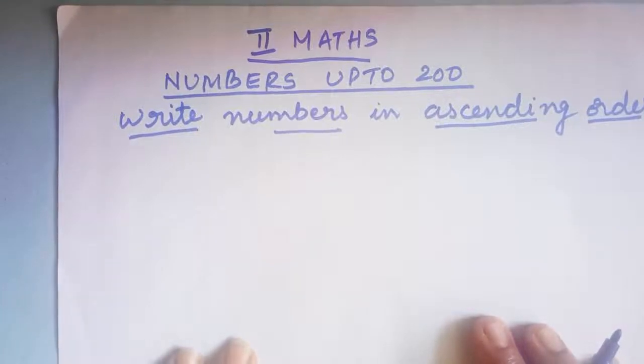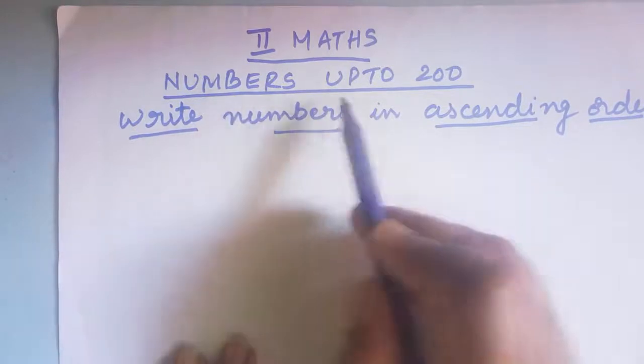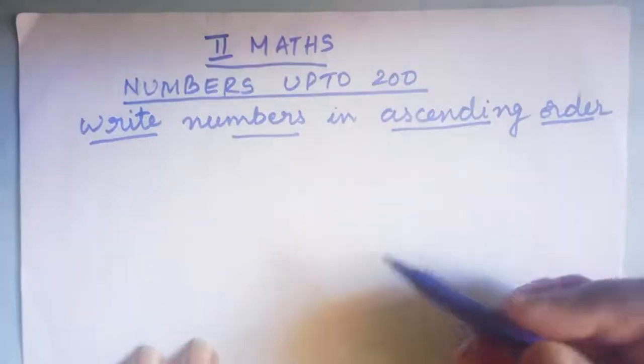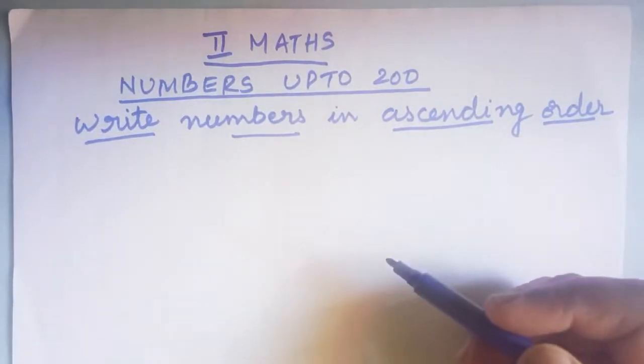This is second standard maths class and the chapter we are learning is numbers up to 200. Children, in the previous class we finished learning to write and compare numbers using the symbols: larger, smaller, and equals to.